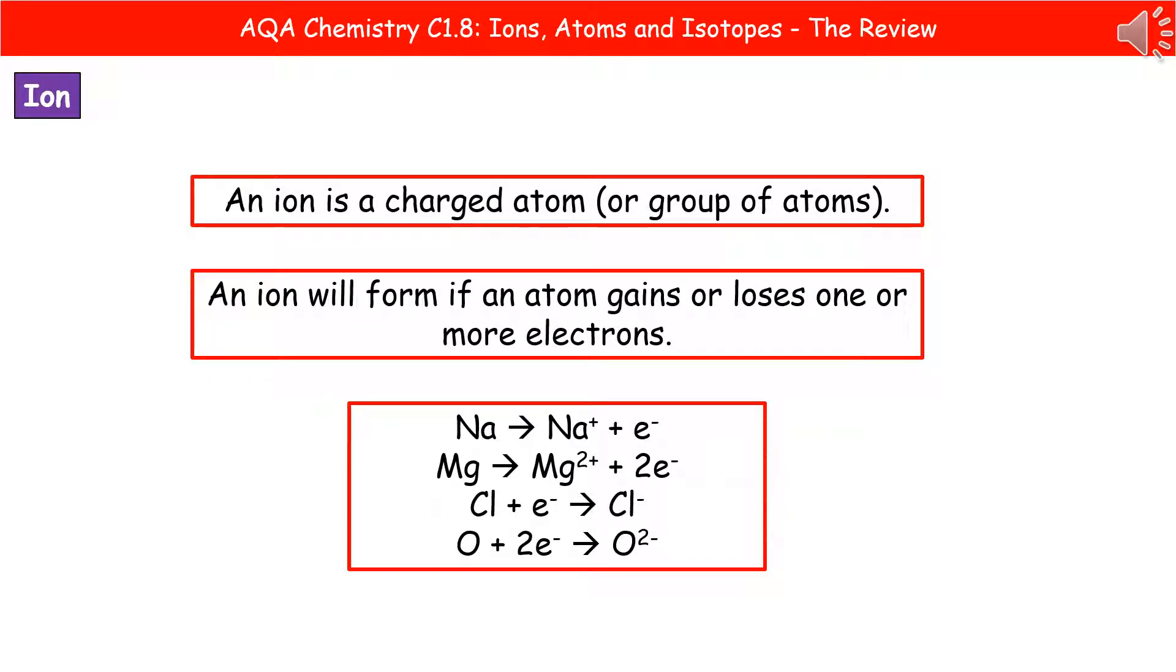Welcome to our review on ions, atoms and isotopes. So the first thing we're going to have a look at are ions. And whenever we're talking about an ion, we're talking about a charged atom or a charged group of atoms. And what we find is that these ions form if an atom either gains or loses one or more of its electrons.